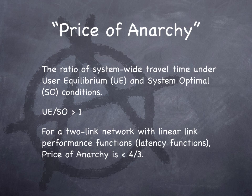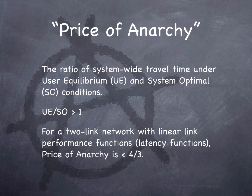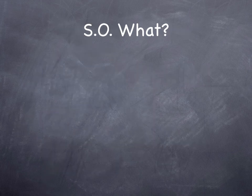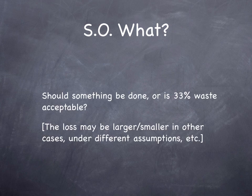How efficient is the user equilibrium route choice? We have what we call the price of anarchy, which is the ratio of total travel time for everybody under the user equilibrium principle to the total travel time in the system optimal situation. Logically, this ratio must be greater than 1. It has been proven mathematically that on a two-link network with linear link performance functions, the price of anarchy is less than four-thirds, or 1.33. If we had a two-link system, we might be incurring up to 33% higher costs because we're letting people make their own routing decisions.